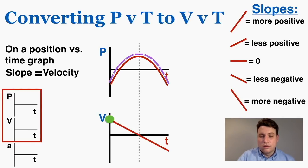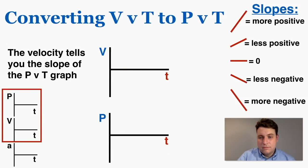I can draw a vertical dotted line to show that these events are happening at similar times. Now let's try converting backwards — starting with a velocity graph and going to a position graph. The velocity tells you what the slope of the position-time graph is doing.